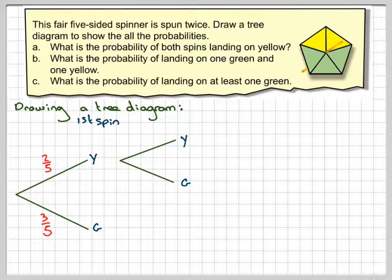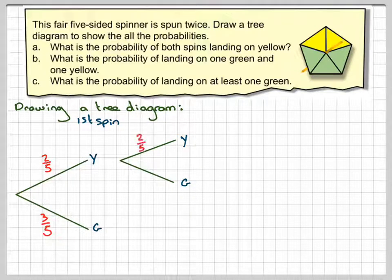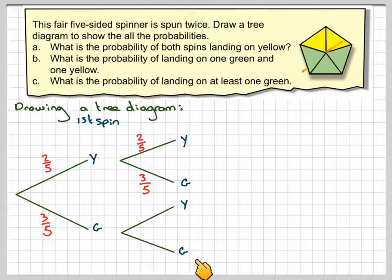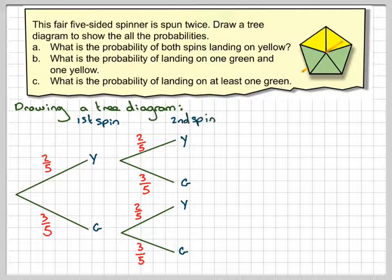And then on the second spin, having got a yellow on the first, I could get a yellow or a green on the second — so that's two fifths and three fifths again. And if I got a green on the first spin, then again I could get a yellow or green on the second spin: two fifths and three fifths. So this is our tree diagram.